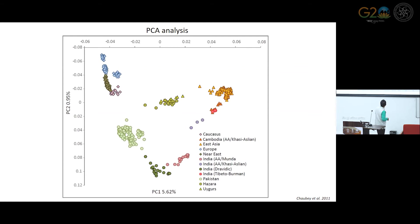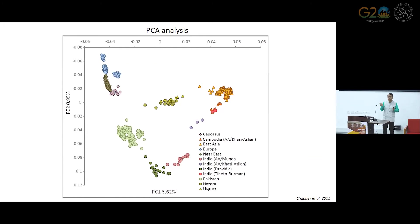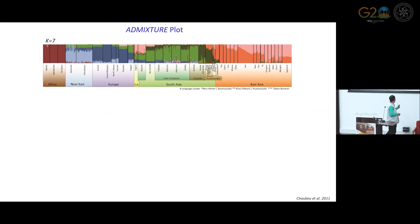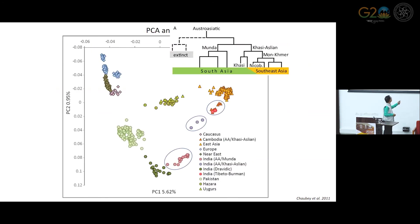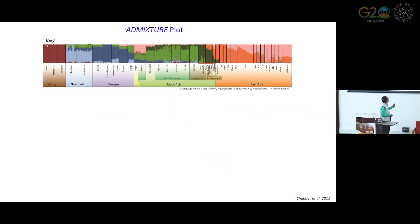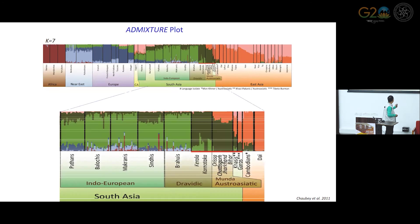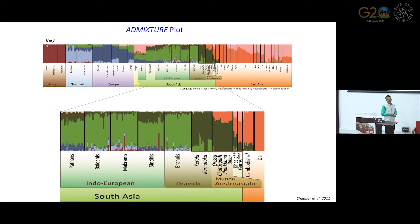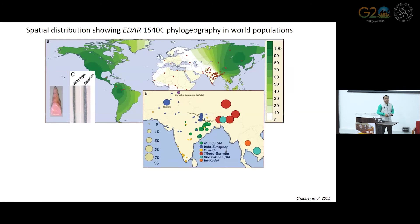In the PCA, the Austro-Asiatic people cluster between Southeast Asia and South Asia but closer to South Asia along the Indian cline. Most Indian populations fall in one line, but Austro-Asiatic populations fall between Southeast Asia and South Asia — meaning they have most of their ancestry from South Asia with some ancestry associated with Southeast Asia. In the admixture analysis, South Asian populations are divided mainly into two components, and the Austro-Asiatic speakers have around 30 percent ancestry associating them with the Southeast Asian population.